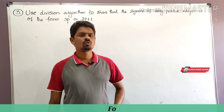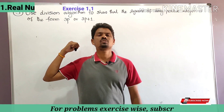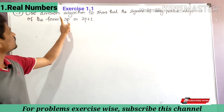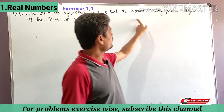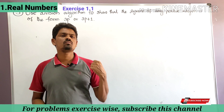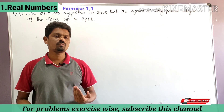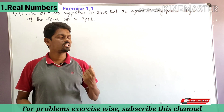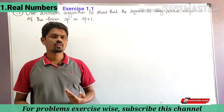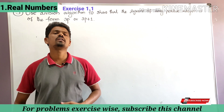Hello students, welcome to my channel Learn More. My name is Varakmar. Today we are going to solve a problem from the chapter Real Numbers. The problem is: use the division algorithm to show that the square of any positive integer is of the form 3p or 3p plus 1. This is the third problem from Exercise 1.1. If you are watching my video for the first time, subscribe to my channel and hit the bell icon to get the latest notifications.